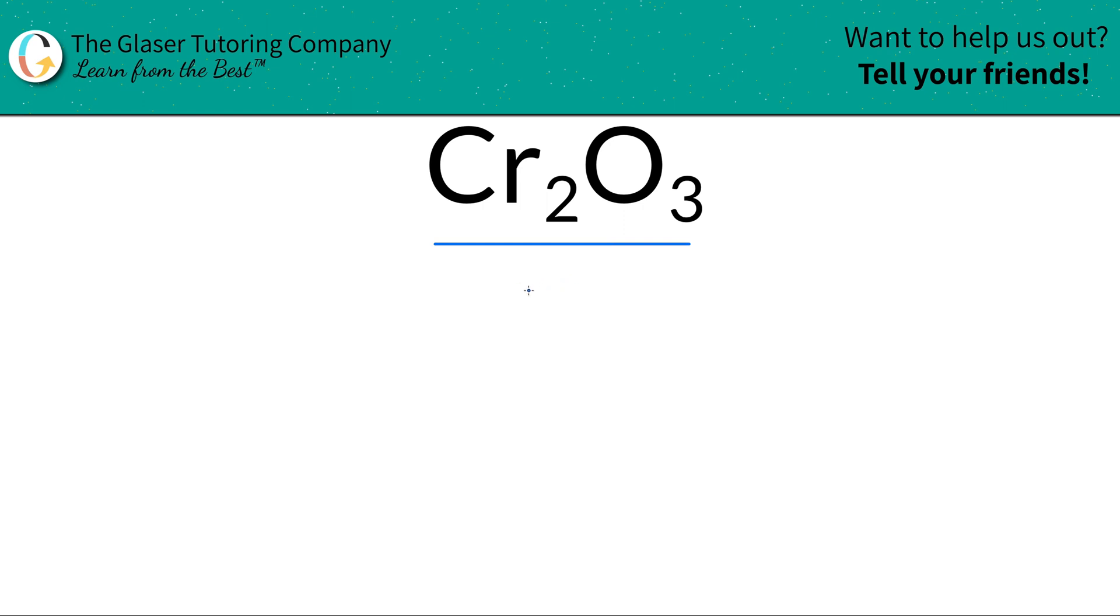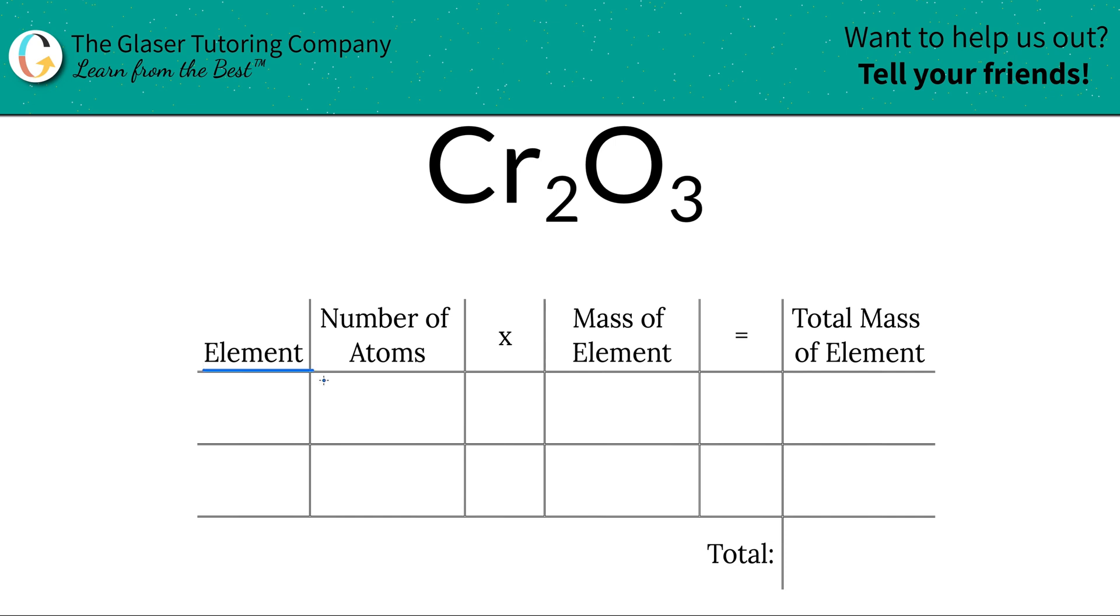Ready? So the first step is we're going to write down the elements we see in the compound. We have chromium Cr and we have oxygen O. Next is to write down the number of atoms of each, and that's where the subscripts come into play. The subscript of chromium is a two, so we have two chromium. The subscript of oxygen is a three, so we have three oxygens.